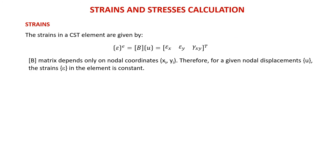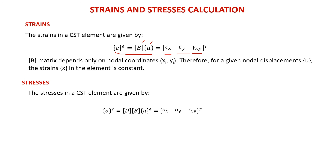After computing the nodal displacements, additional parameters we can determine are the strains and stresses of the CST elements. The strain in a CST element is given by: strain equals matrix B times matrix U (the previously computed displacement). The strain components are strain in X, strain in Y, and shear strain. The stress is given by: stress equals matrix D times matrix B times matrix U, which is matrix D times the strain. The stress components are stress in X, stress in Y, and shear stress.